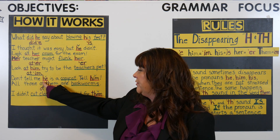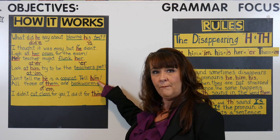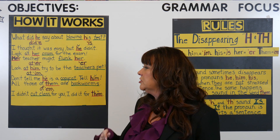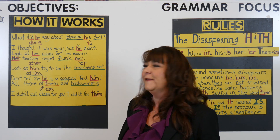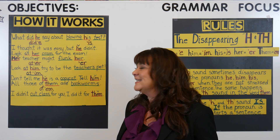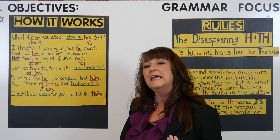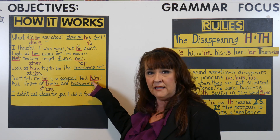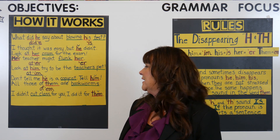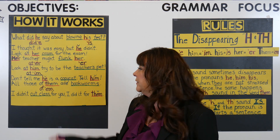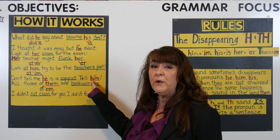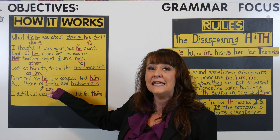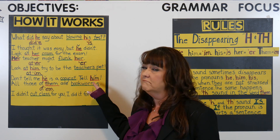Here's another example where both he and him are stressed, so we can't reduce the sound. Listen for how I stress both words: 'Don't tell me he is a copycat. Tell him.' Because I stress the he and the him, we can't make that H disappear. No reduction. 'Don't tell me he is a copycat. Tell him.'